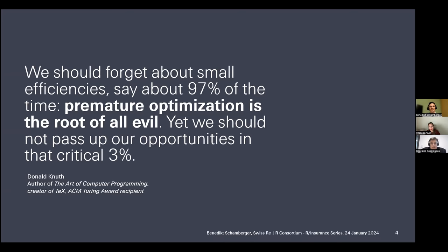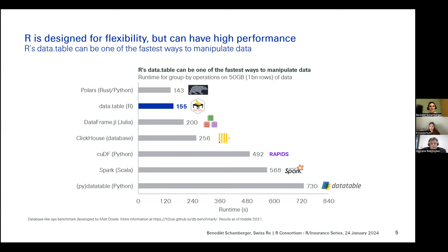At the same time, the truth is that for typical problems you probably don't really need to think that much about optimization — there are other considerations that are much more important. But what we're talking about today is what's called the critical three percent: what can you do in those rare cases where you've actually identified a real need to be fast and you'd like to use the tools available?